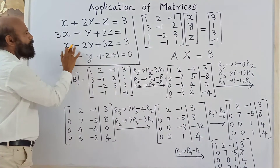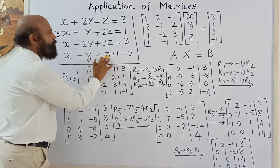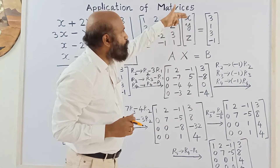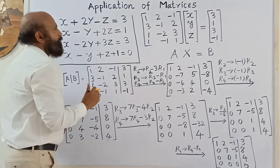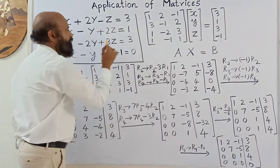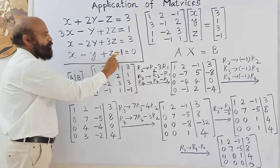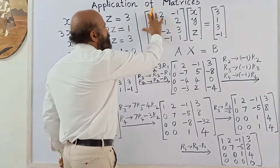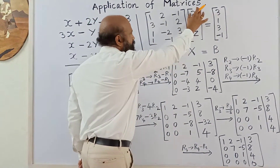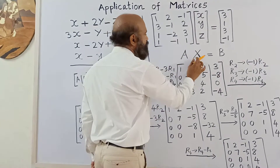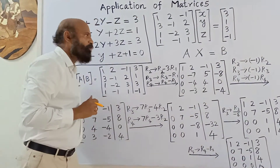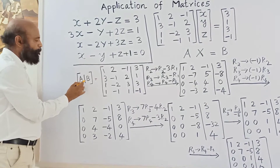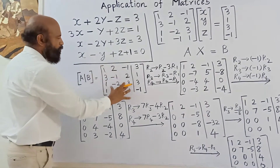The unknowns matrix is x, y, z. The constants are 3, 1, 3, and in the last equation the constant is moved to the other side, giving -1. So Ax = b, where A is the coefficient matrix and b is the constants matrix. The augmented matrix is formed by combining the coefficient matrix with the constants column.